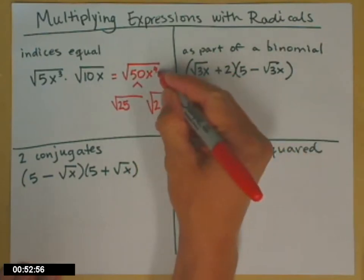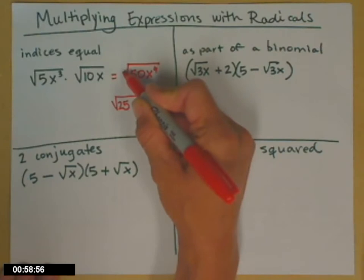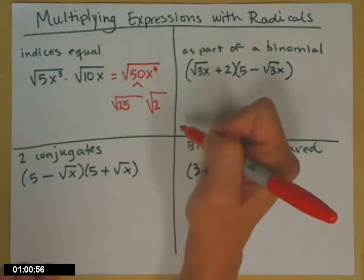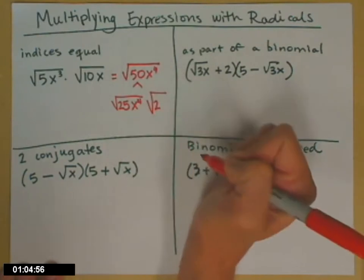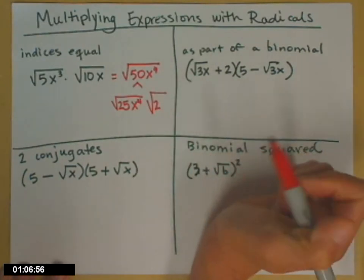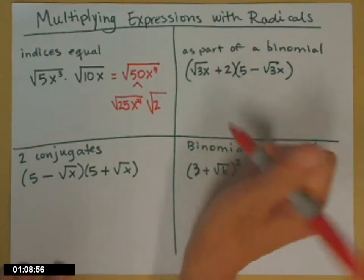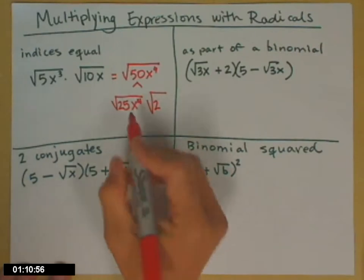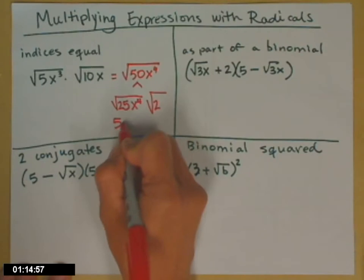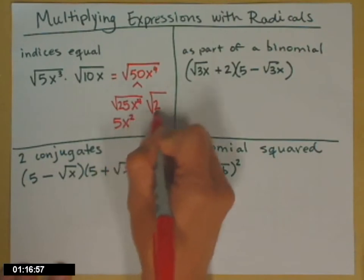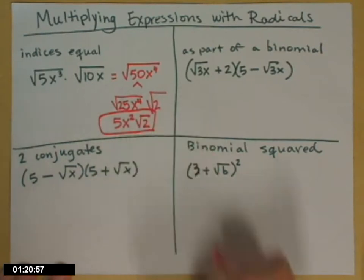x to the fourth. The perfect square factor is the, since the 4 is an even number and my index is 2, the index goes evenly into the power of the variable. That means the entire thing is a perfect square in this case, so it goes into the first bin. Nothing left over. Now we simplify that first radical. So the square root of 25 is 5. The square root of x to the 4 is x squared. And the square root of 2 tags along.